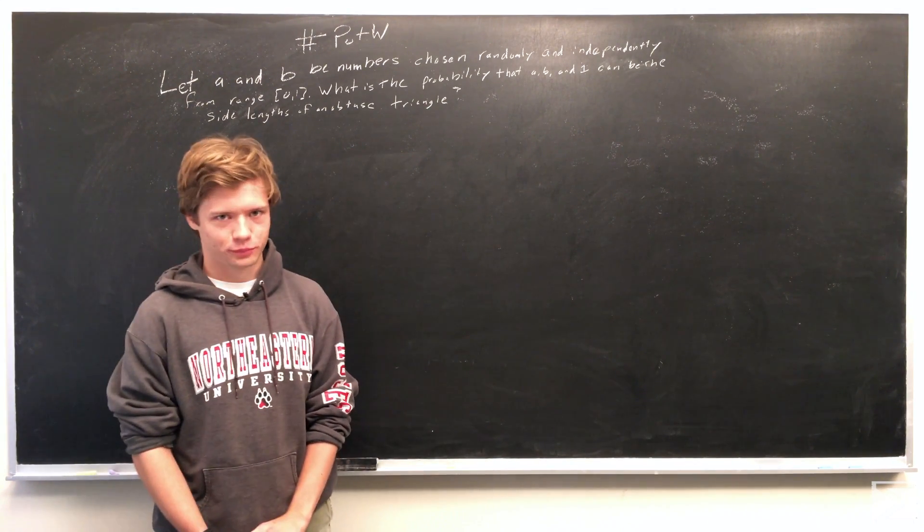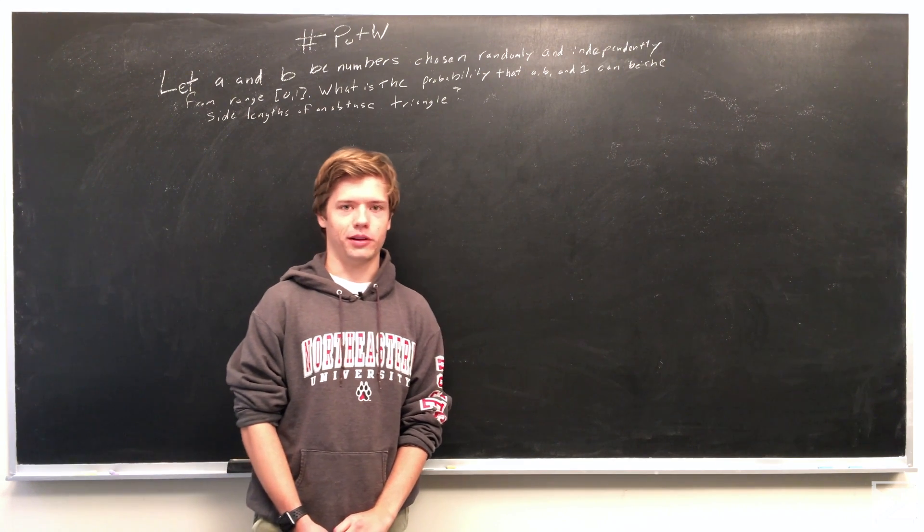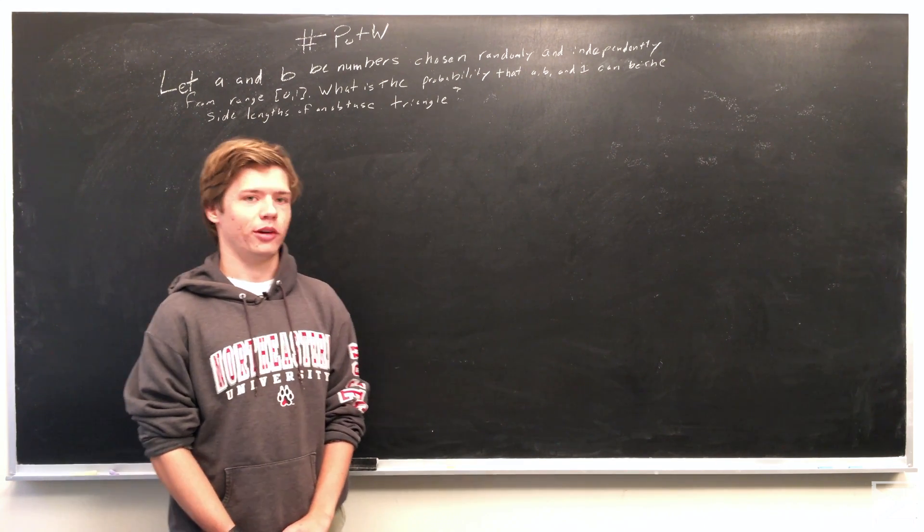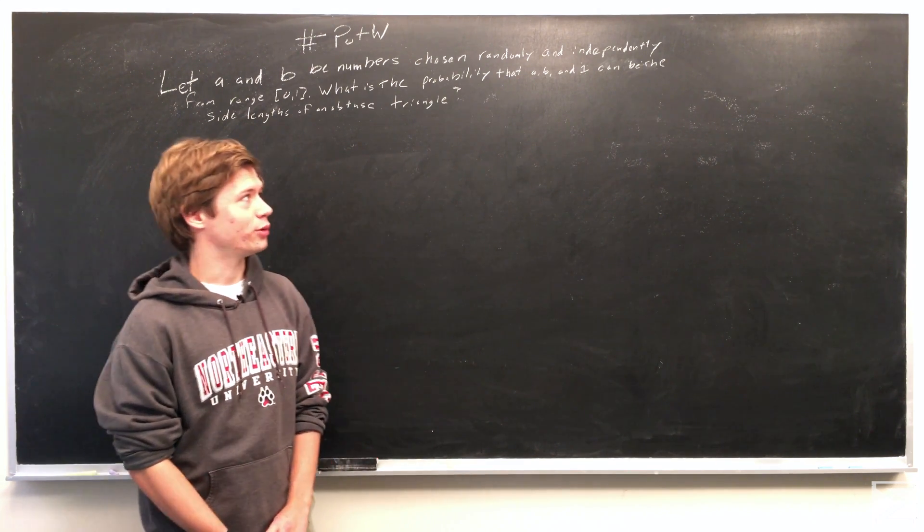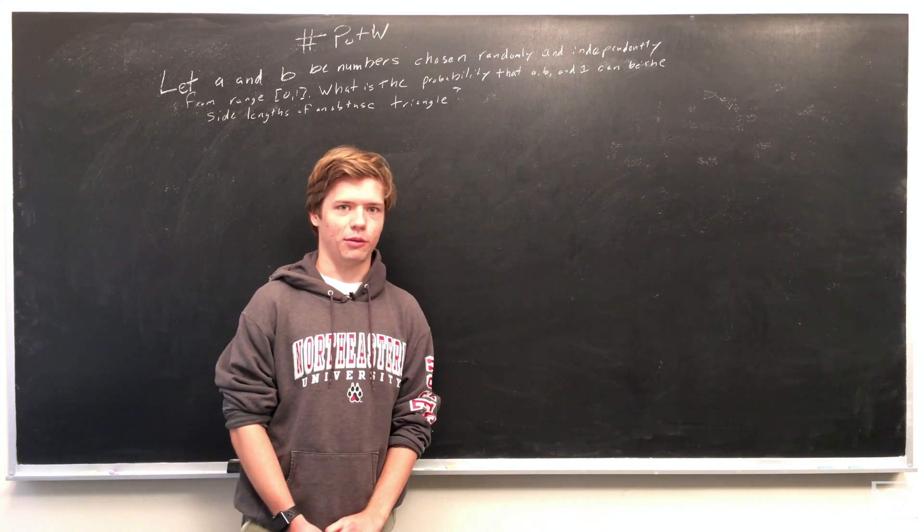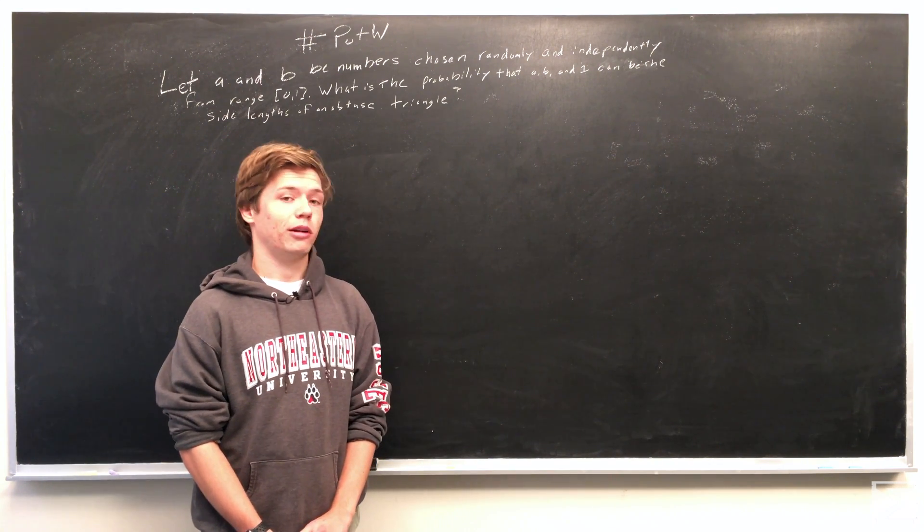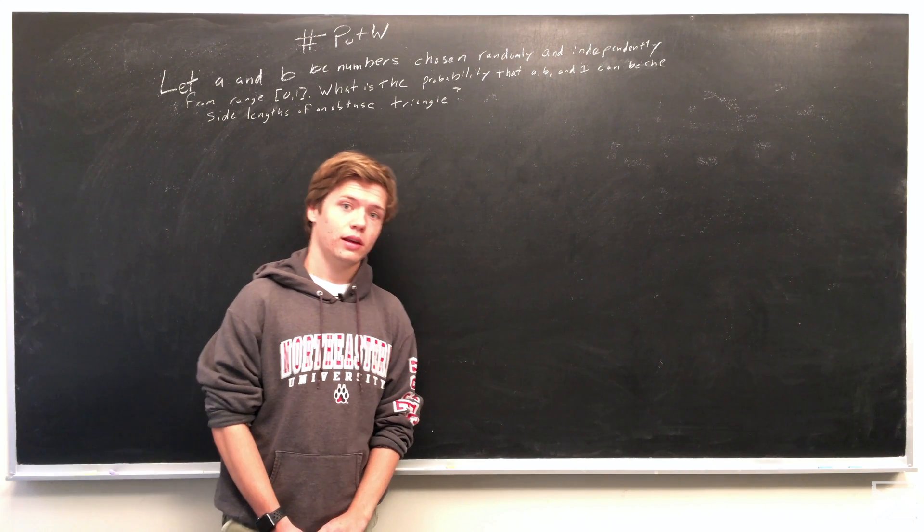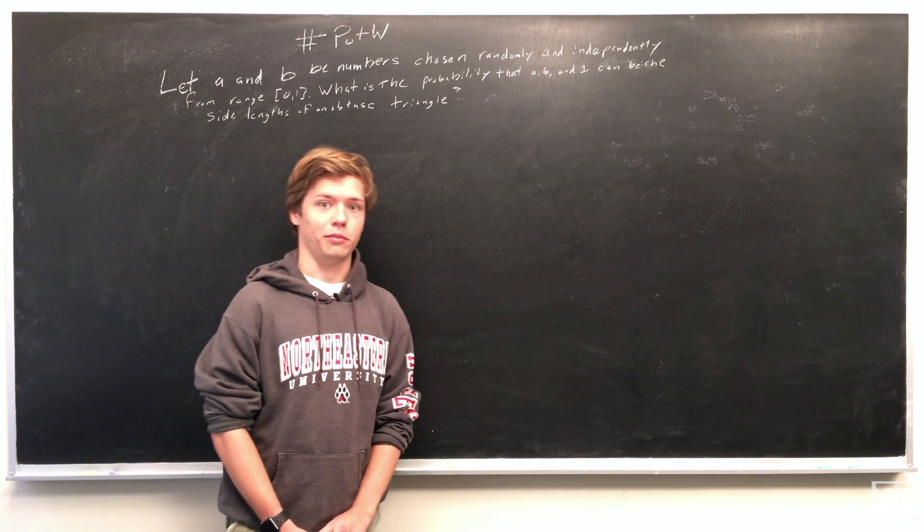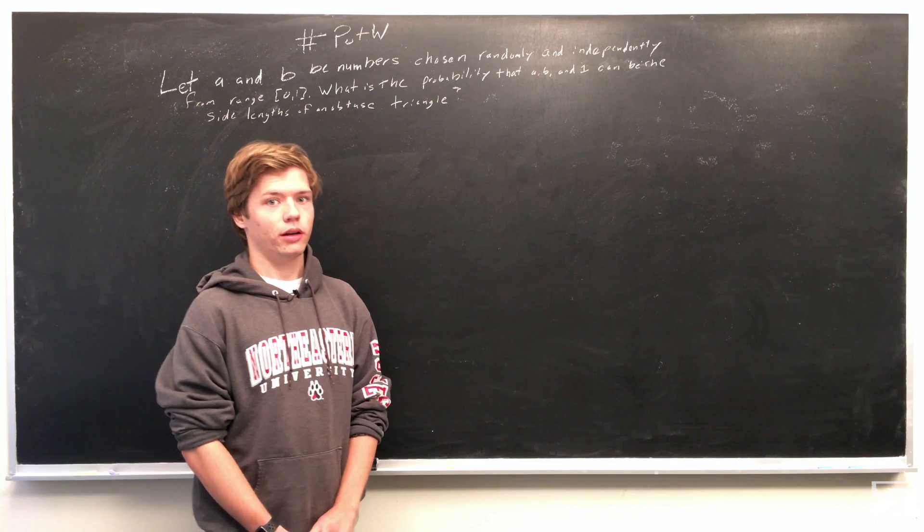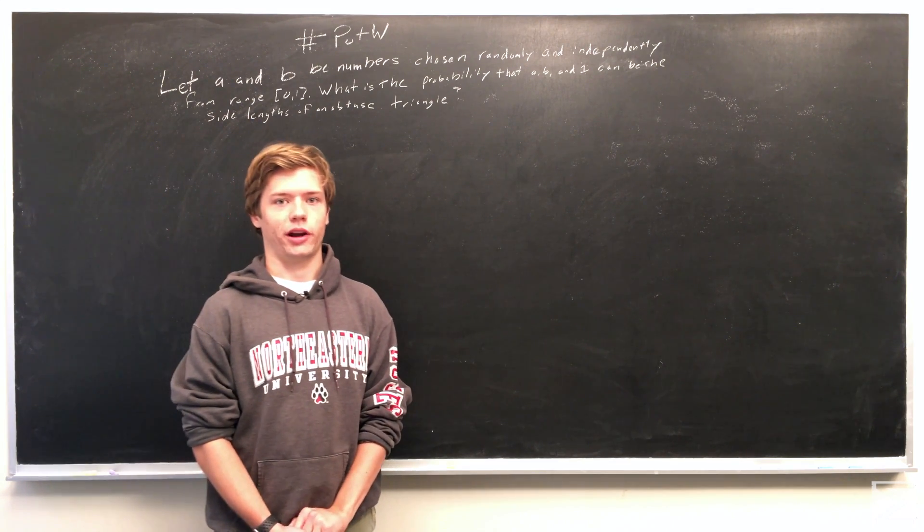For this problem we are picking numbers A and B from the range 0 and 1, where it's a closed range, and we want to find the probability that when we independently and randomly pick A and B, that A, B, and 1 can form the side lengths of an obtuse triangle.